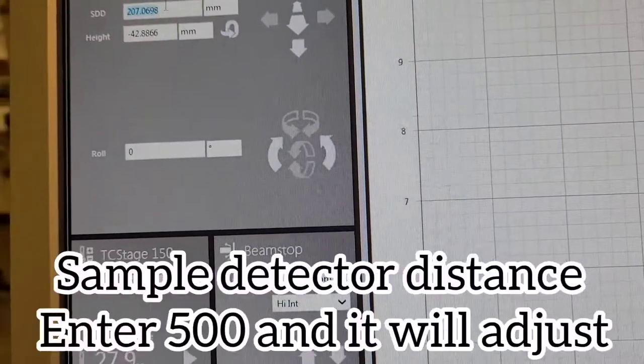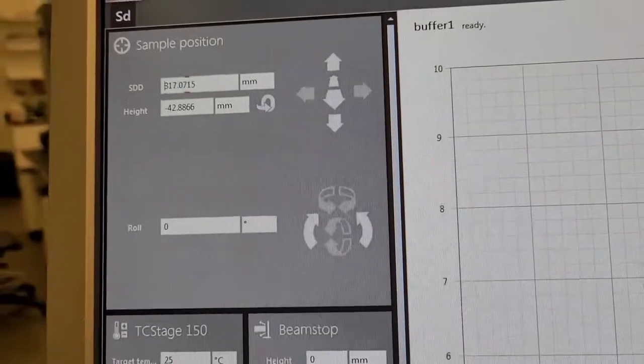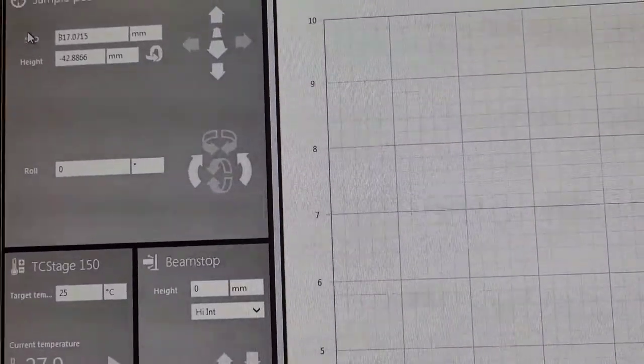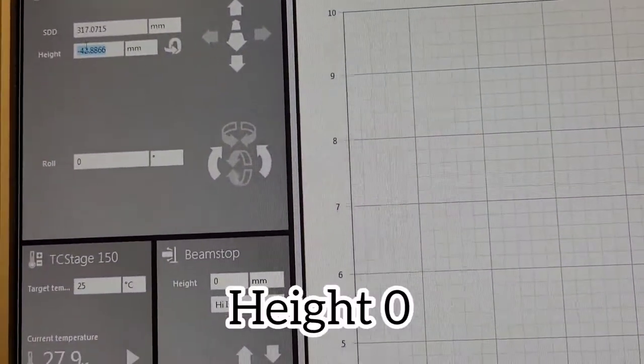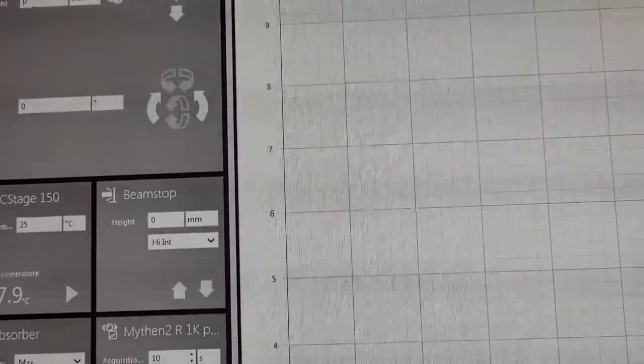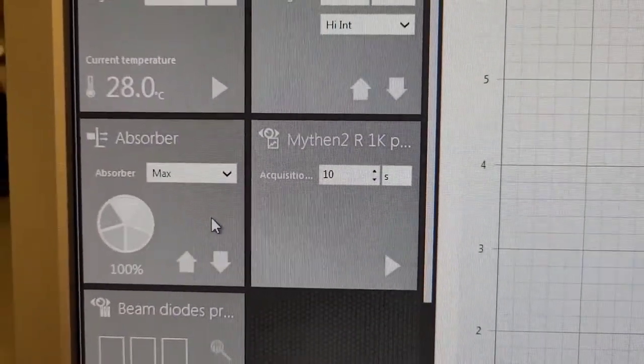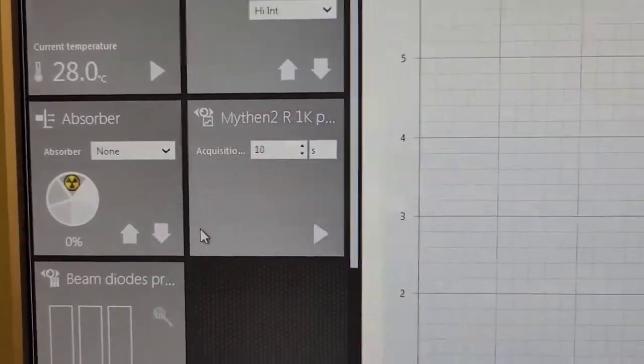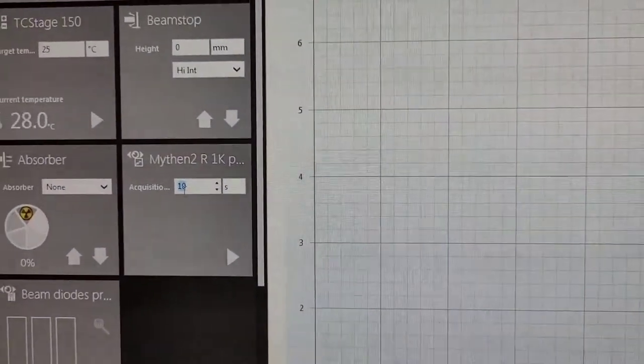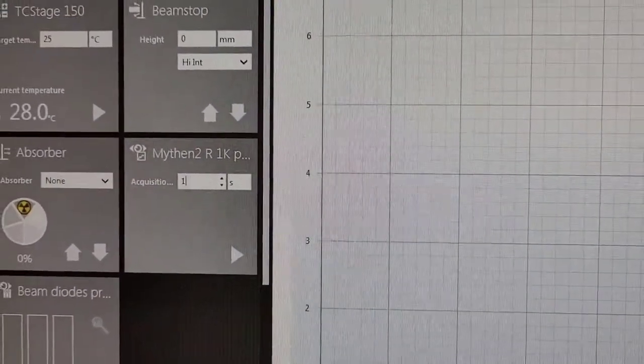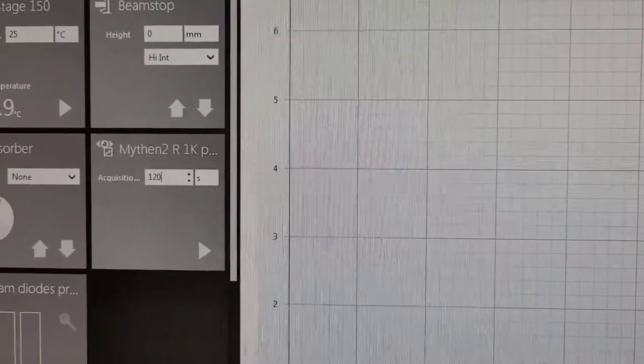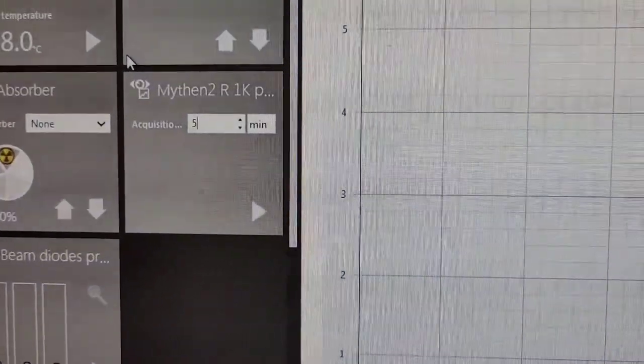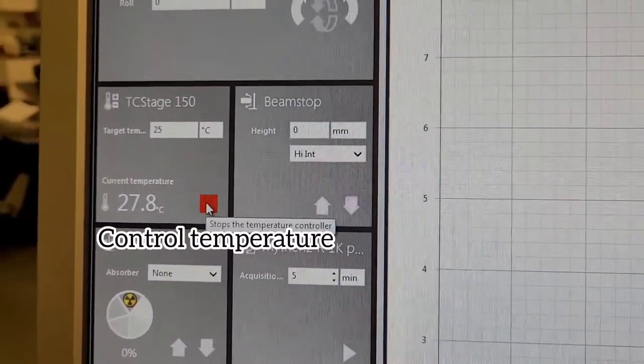I can start acquiring data from my buffer. Here we have a sample detector distance value. I put 500 and it goes to the 317 point something which is what it should be, but because I can't remember that number I put 500. Everything else - height and roll is 0, absorber none, beam stop high intensity setting. At this point I'm going to do a test measurement. I'm going to put the time that I want for the test run, something small like 5 minutes.